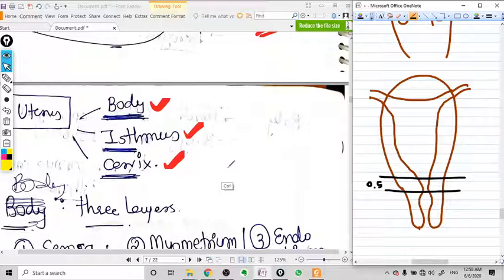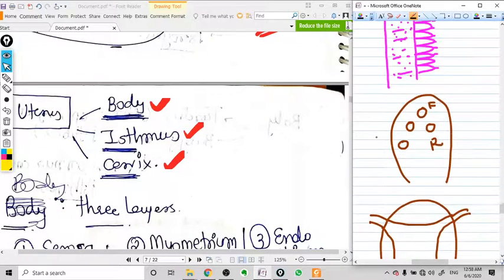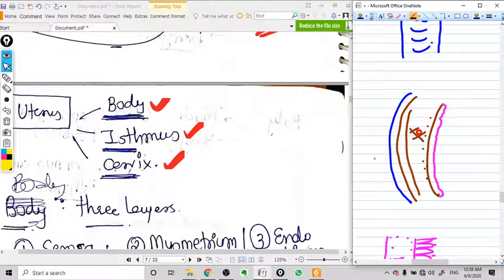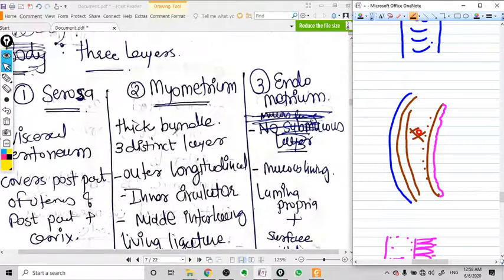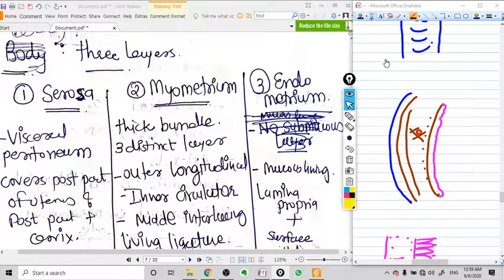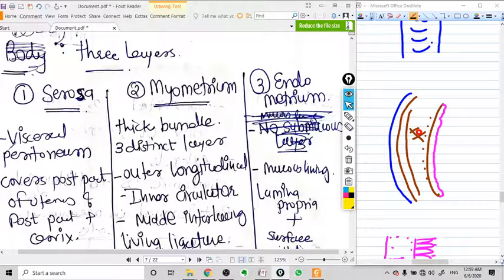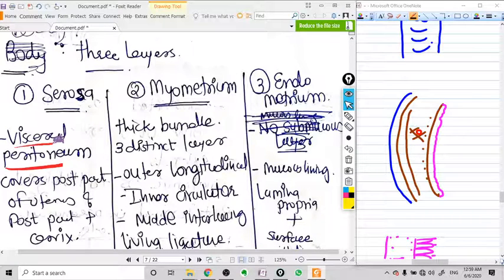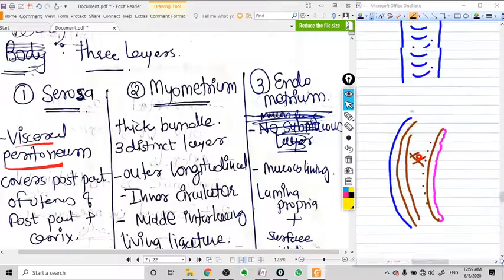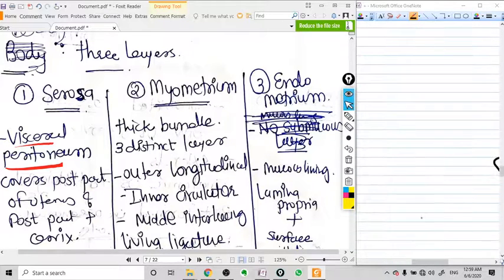The wall of the uterus is made of three distinct layers. The first one is serosa. The serosa is nothing but the visceral peritoneum that is very adherent to the uterus.